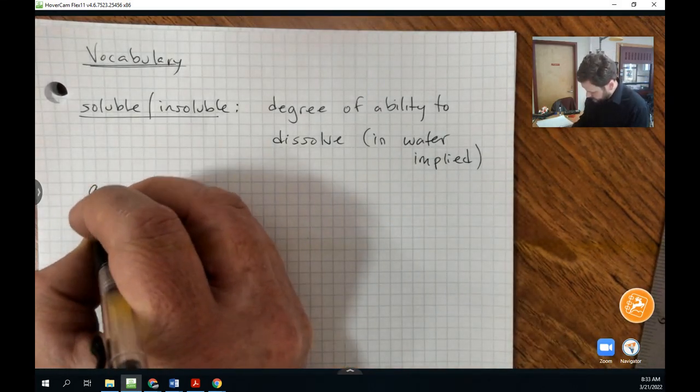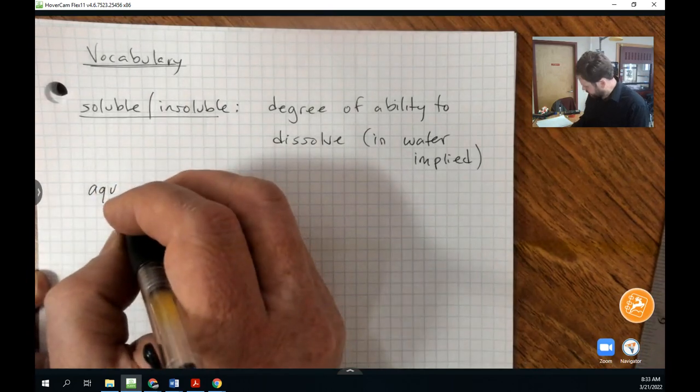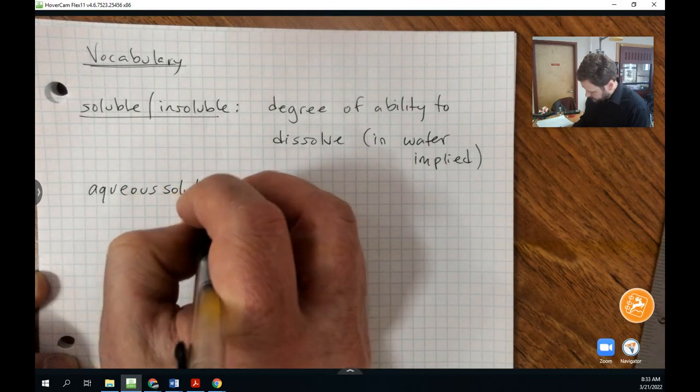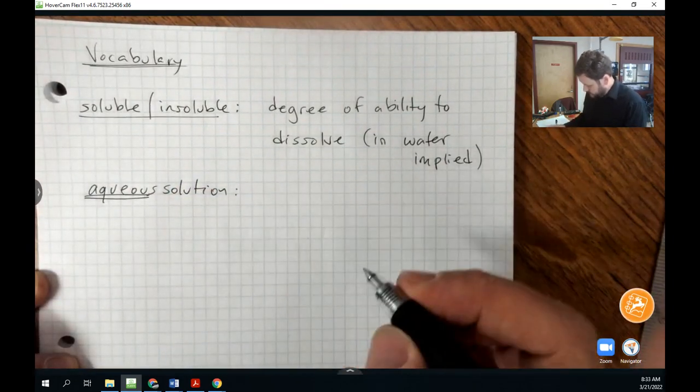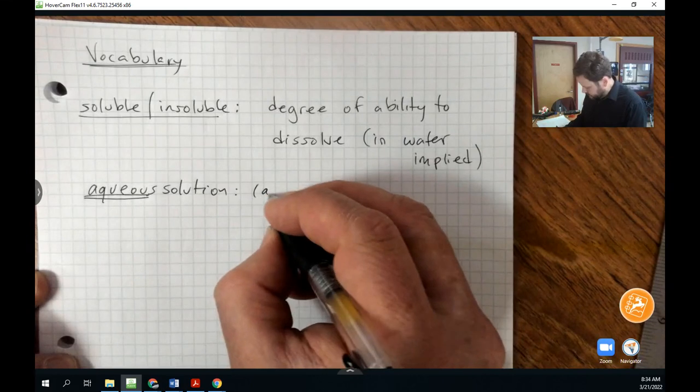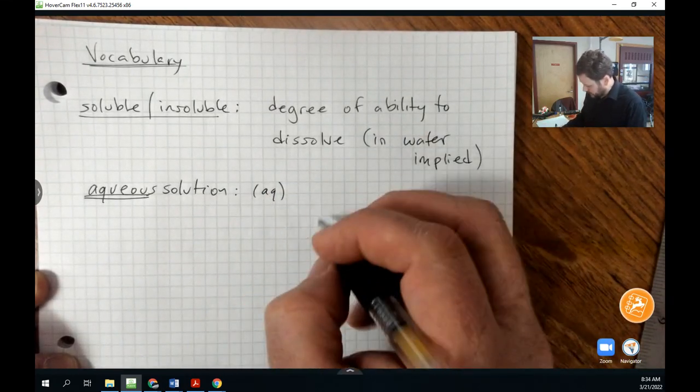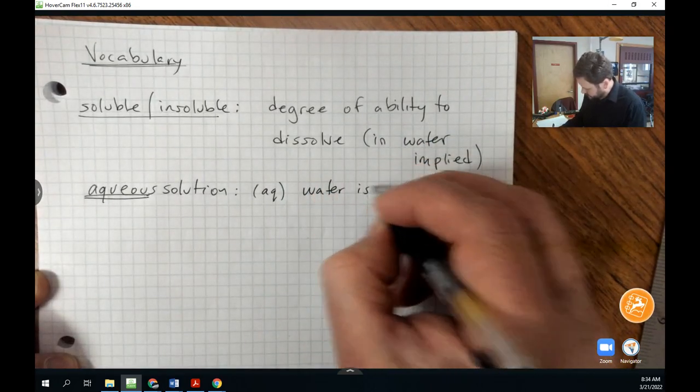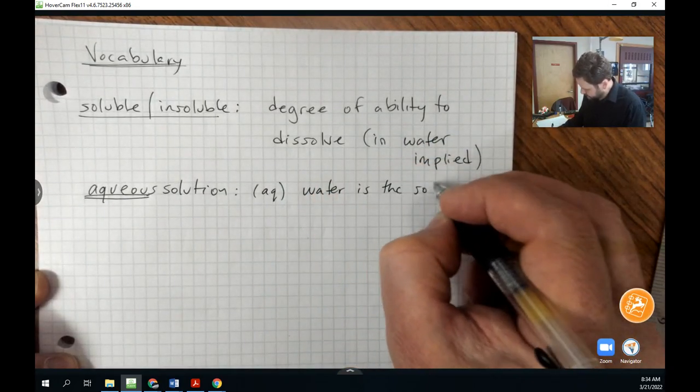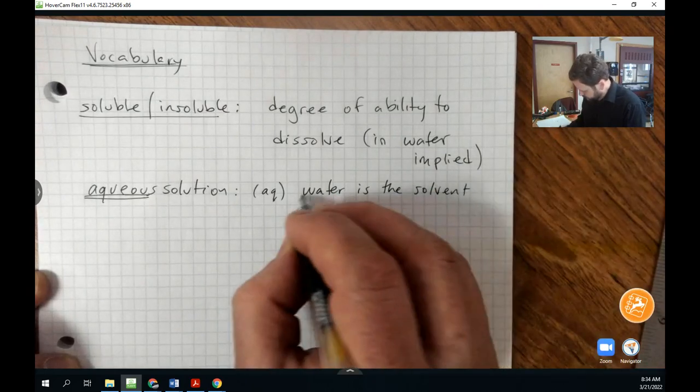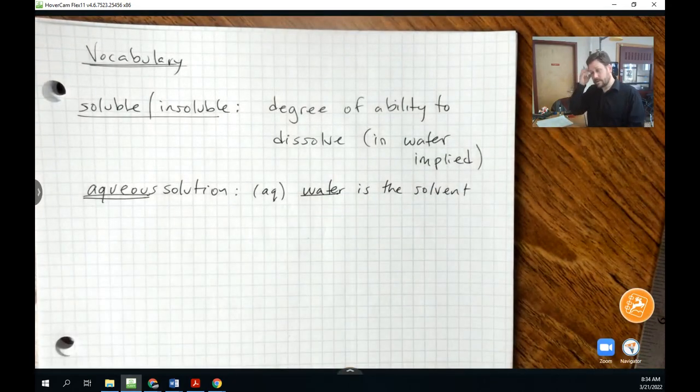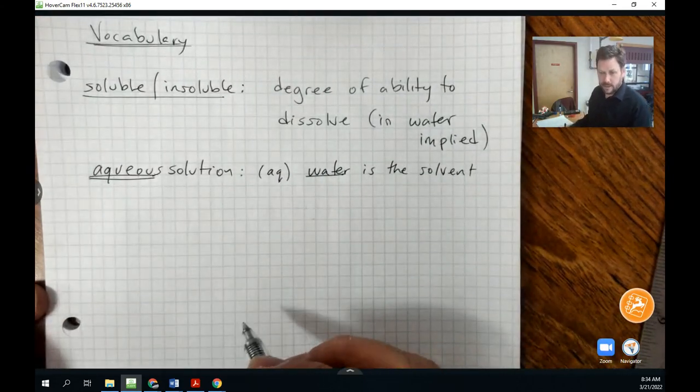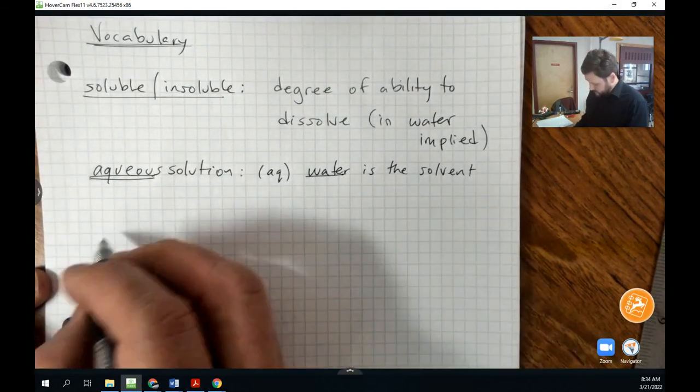Let's define something we've talked about before, which is an aqueous solution. That is anything where water is the solvent. And we use that abbreviation AQ in this case as a state symbol. That just means water is the solvent. So if I were talking about dissolving phenolphthalein in alcohol, it's not an aqueous solution. And I'd need to specify that I'm using a different solvent.